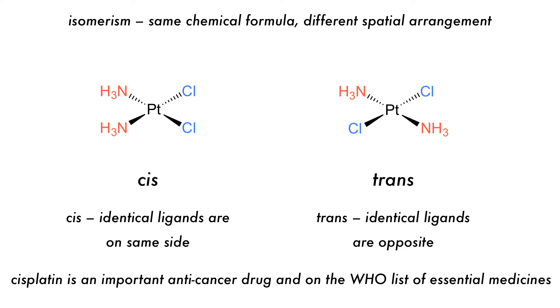The cis isomer is called cisplatin and is an important anti-cancer drug on the World Health Organization's list of essential medicines, whereas the trans isomer is not as effective.